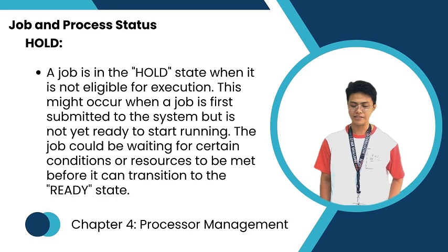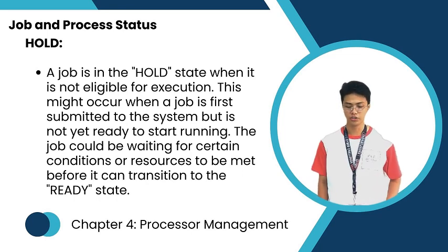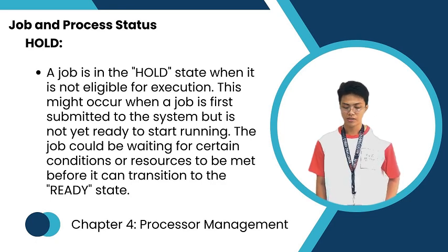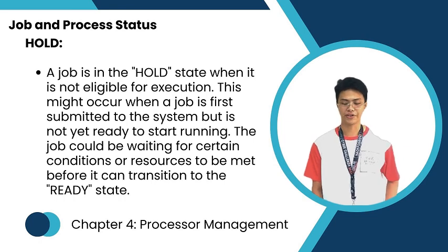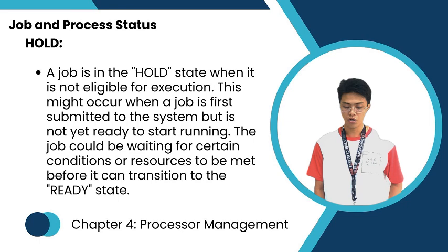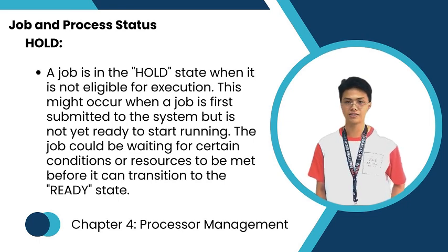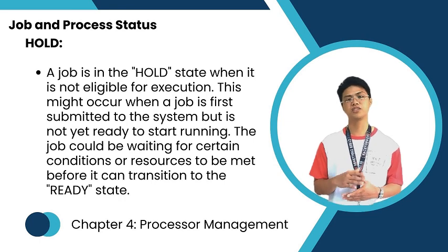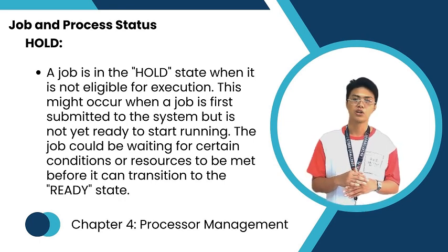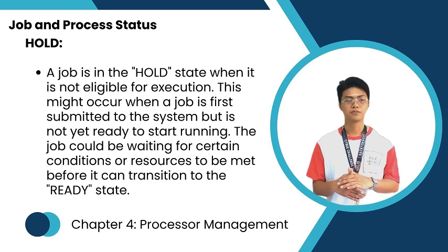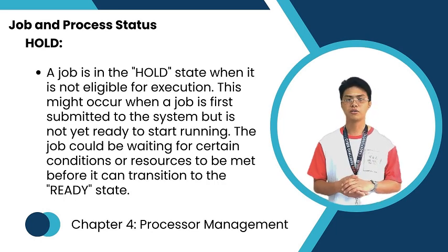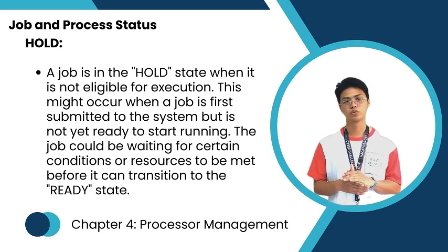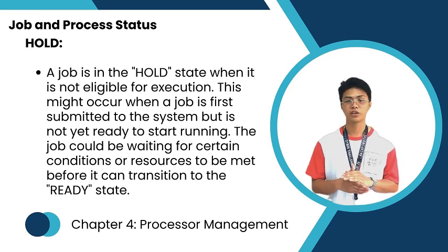A job is in the hold state when it is not eligible for execution. This might occur when a job is first submitted to the system but is not ready to start running. The job could be waiting for certain conditions or resources to be met before transitioning to the ready state. In hold, the system collects all prerequisites of the task — such as required inputs and outputs — before proceeding.